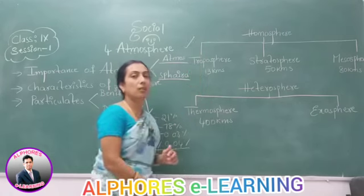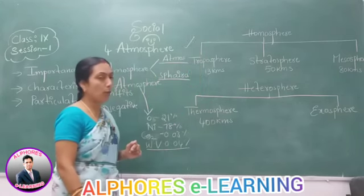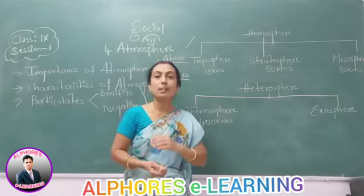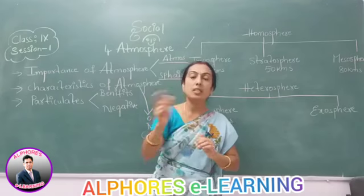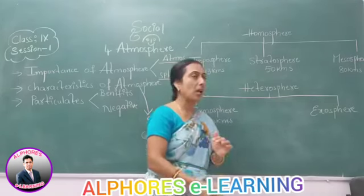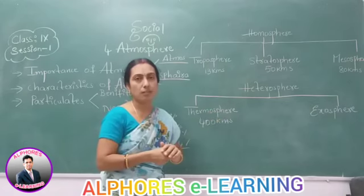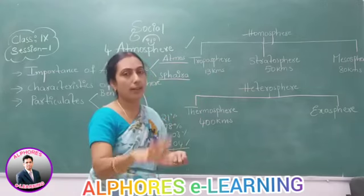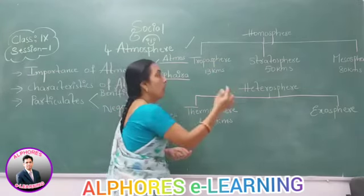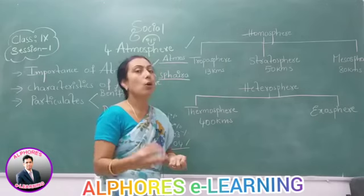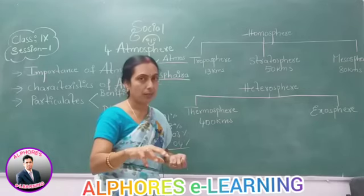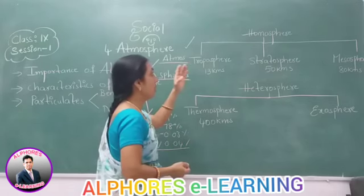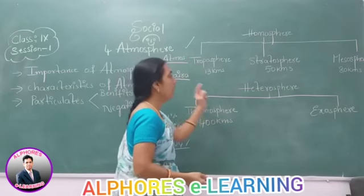This is the important topic. Just as the earth is divided into layers, the atmosphere also consists of layers. On the basis of composition of gases, atmosphere is divided into two main layers: homosphere and heterosphere.